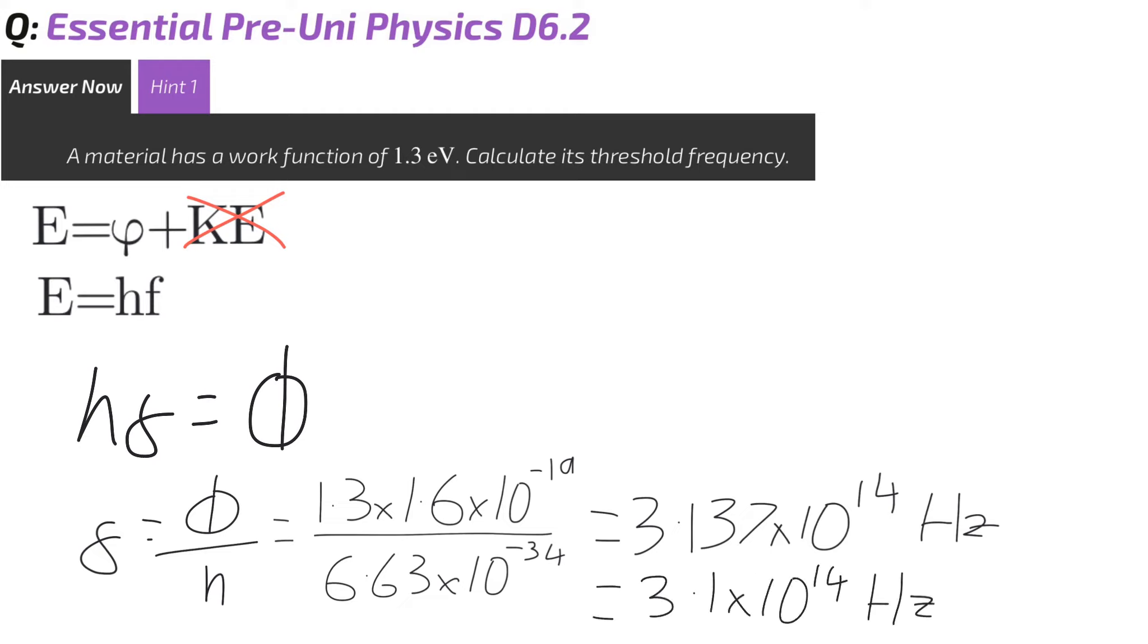Now if you're not sure how to put that into Isaac Physics, when you've got something times 10 to the power of, you can type in 3.1, and then instead of times 10 to the power of, you can use a capital E, which means exponential. That basically is your times 10 to the power of button that you would have on your calculator, and then you just type in 14. And the units, of course, is hertz.